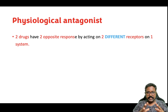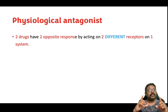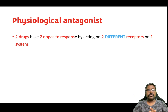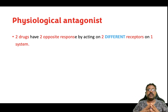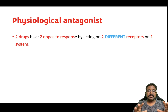The simple meaning of physiological antagonist is: there are two drugs. Among these two drugs, one will be a physiological agonist and another will be a physiological antagonist. Whenever these two drugs are combined, the responses will be in opposite directions.